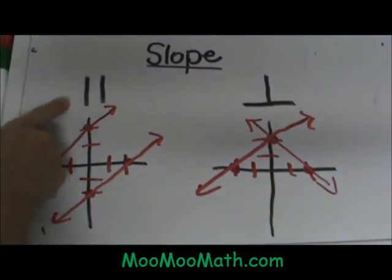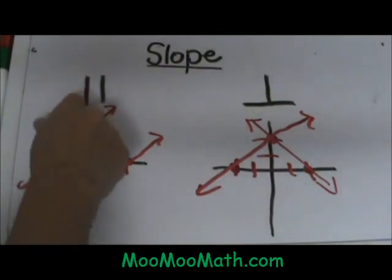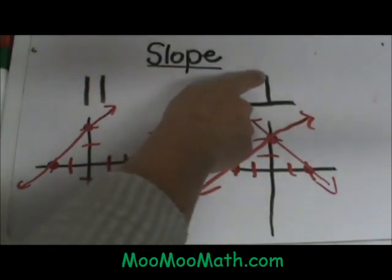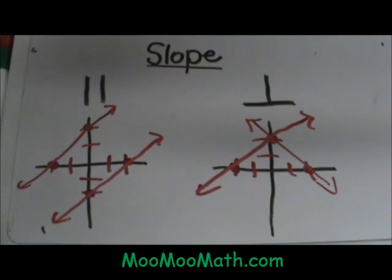First we are going to look at the slope of parallel lines. This symbol in black represents parallel lines. It looks like two tall L's. Over here we have the symbol for perpendicular which looks like a large upside down T.